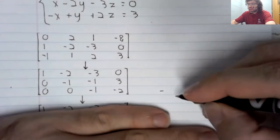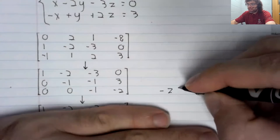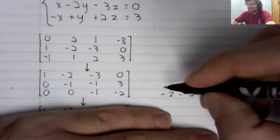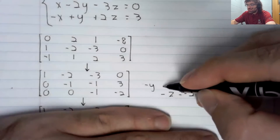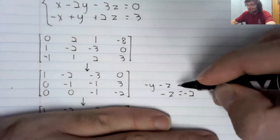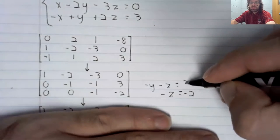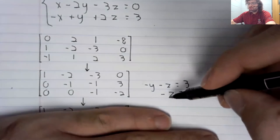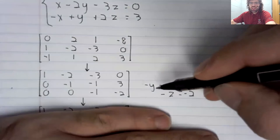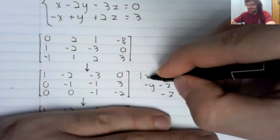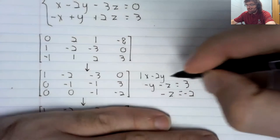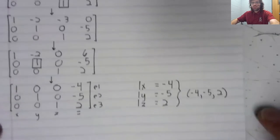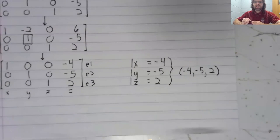Where you get the matrix into row echelon form here, and then you'd still have to solve equations. You'd have to solve for Z. And then once you solved for Z, you'd have to solve for Y. And then once you solved for Z and Y, you'd have to solve for X. There's none of that here.